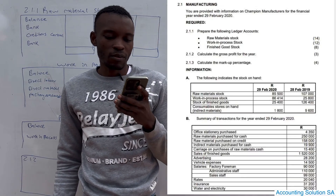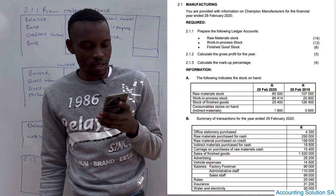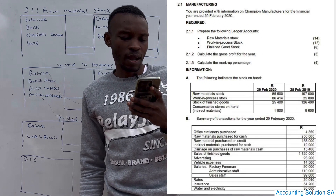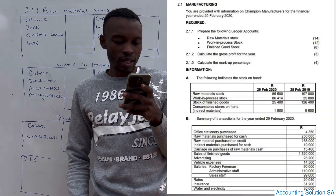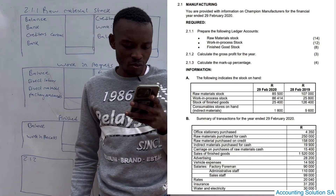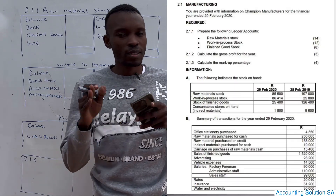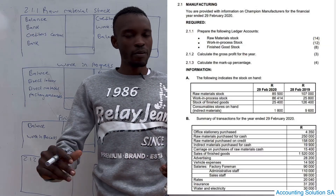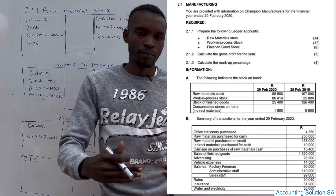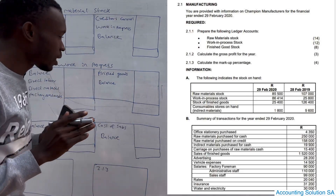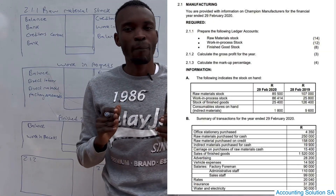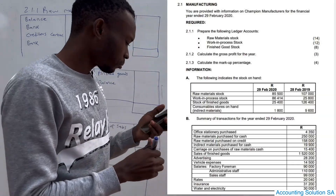Let's go straight to the question paper we have for today. Question 2.1: you are provided with the information of Champion Manufacture for the financial year end 29 February 2020. Required: prepare the following ledger accounts - these are the three accounts - and we're going to calculate gross profit for the year and the markup. The information shows stock on hand with opening balance and closing balance. The previous year is opening and the current year we are dealing with is closing. All these accounts record opening balance on the debit side and closing balance on the credit side, which means you already have free six marks just for copying opening and closing balance.